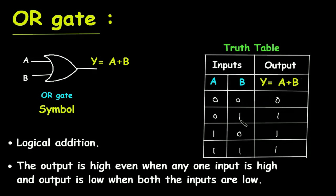Then 0+1=1, that is low plus high equals high. Here 1+0 is equal to high. Then 1+1=1, that is high plus high equals high.